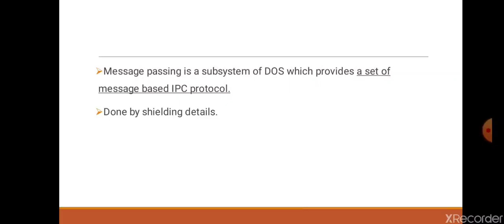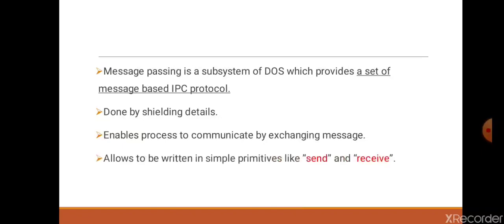This enables processes to communicate by exchanging messages. For that, there are primitives for sending and receiving the message, and those primitives are send and receive. It serves as infrastructure for building other higher levels of IPC systems.